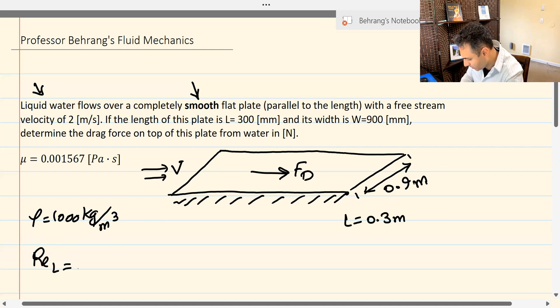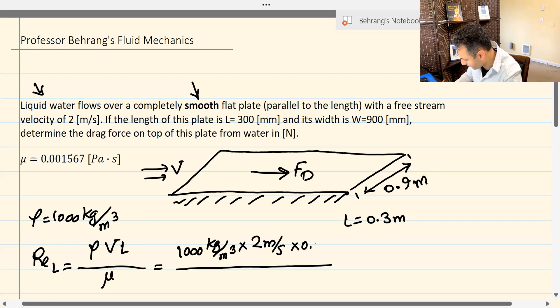So Reynolds L would be rho times V times L over mu. And so I will have 1,000 kilograms per meters cubed times velocity is given as 2 meters per second, times the length is given as 0.3 meters. And viscosity is given as 0.001567 Pascal second. Pascal second is also a basic SI unit. You can go ahead and calculate this to see if this number is correct. I've already calculated these values. So it is 382,794.